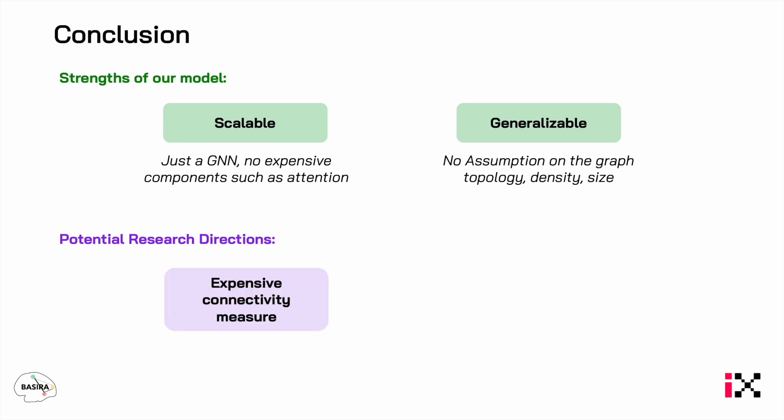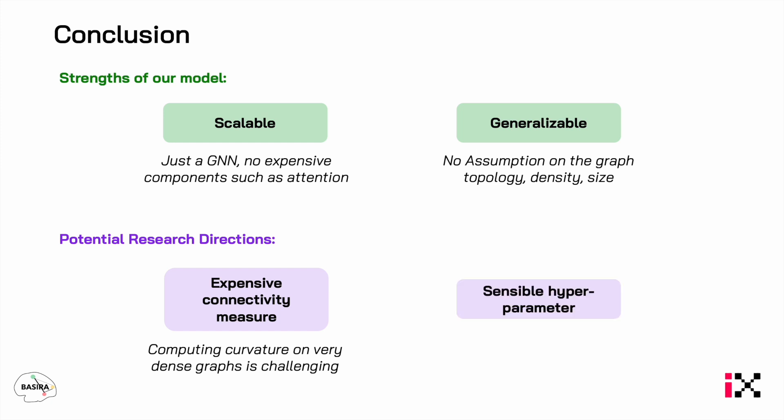The first future direction is that DuoGNN relies on expensive connectivity measures — for example, computing curvature on dense graphs is challenging. How can we detect bottlenecks with less expensive connectivity measures? Also, DuoGNN introduces one sensitive hyperparameter to define how many edges to remove. How can we learn it automatically and reduce the fine-tuning complexity of the model?